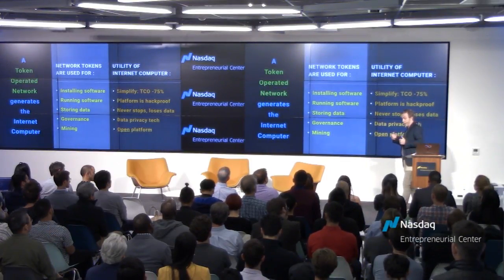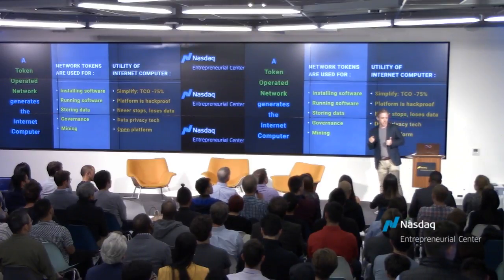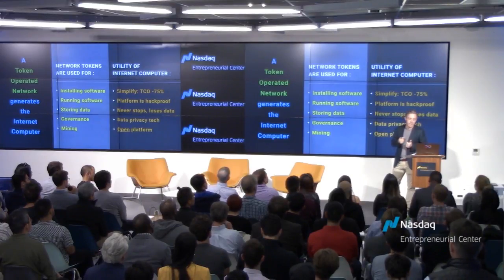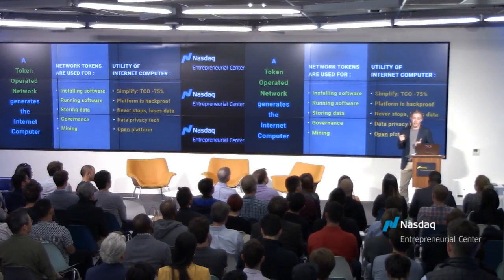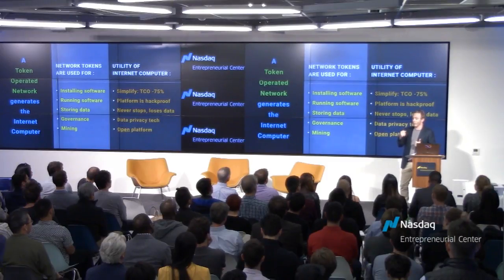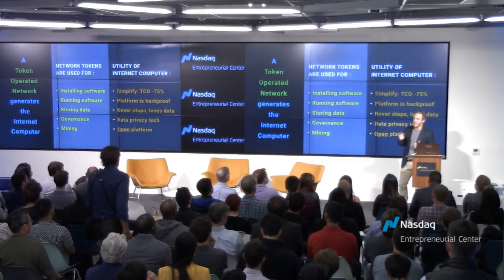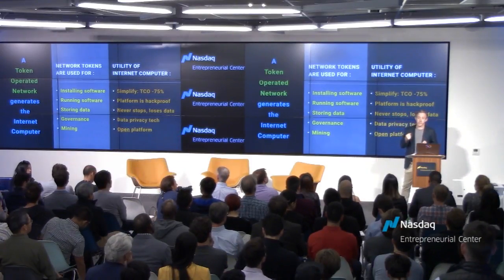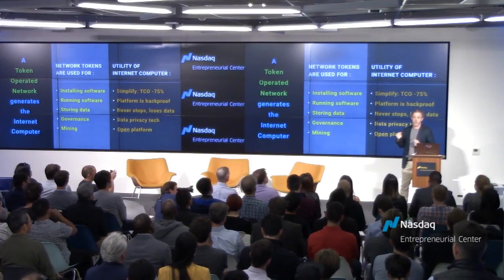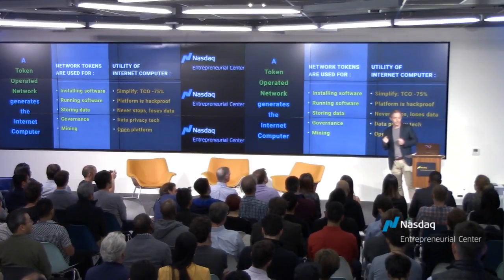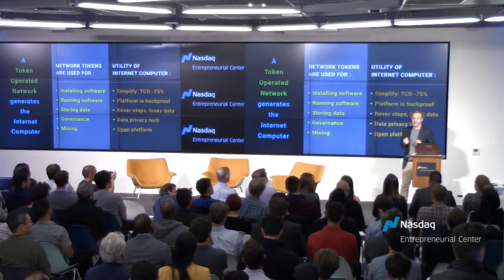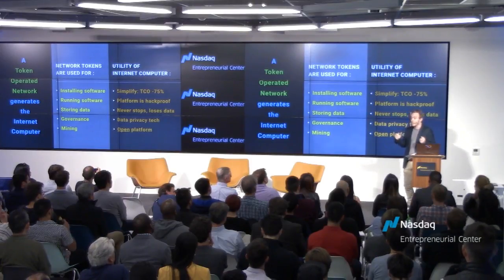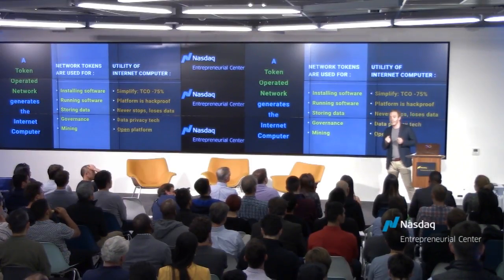The purpose of this session is to discuss blockchain networks, tokens, and regulation. The internet computer is generated by a token-operated network — an expression we'll hear more and more. Tokens are used for installing software, running software, storing data, in the governance system the network has, and also for mining to remunerate people that connect their computers to help make this internet computer.